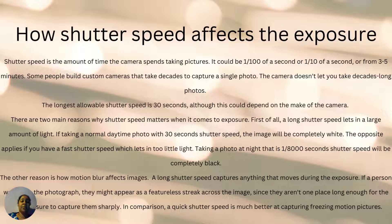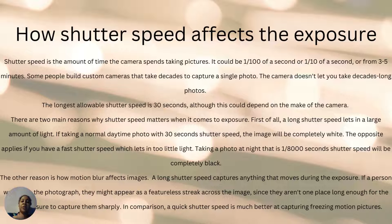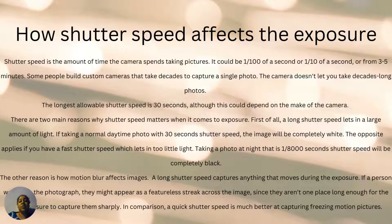Some people build their own custom cameras that take decades to capture a single photo, but the standard camera doesn't let you take decade-long photos. The longest allowable shutter speed is 30 seconds, although this could depend on the make of the camera since there are different brands and models. There are two reasons why shutter speed matters for exposure: first, long shutter speeds let in a large amount of light — if you're taking a daytime photo with a 30-second shutter speed, the image will be completely white.